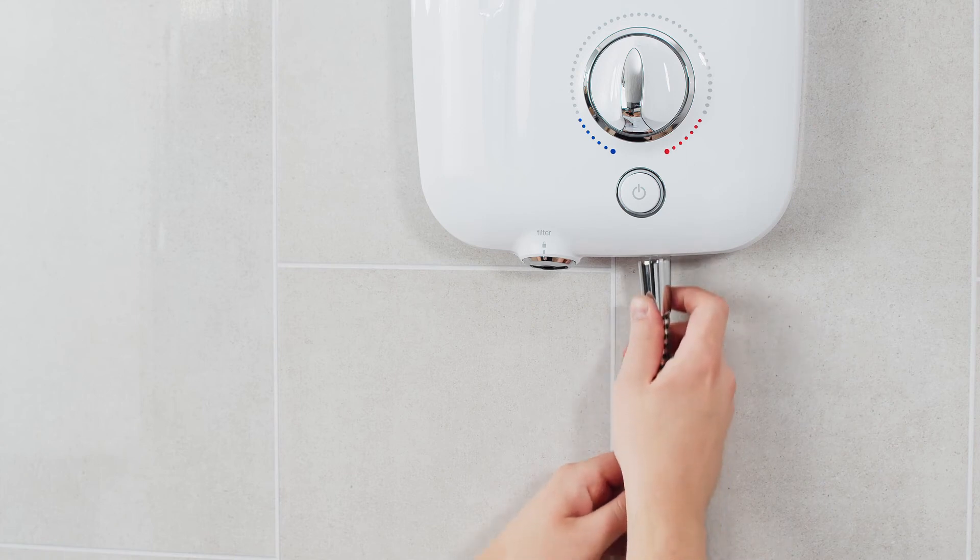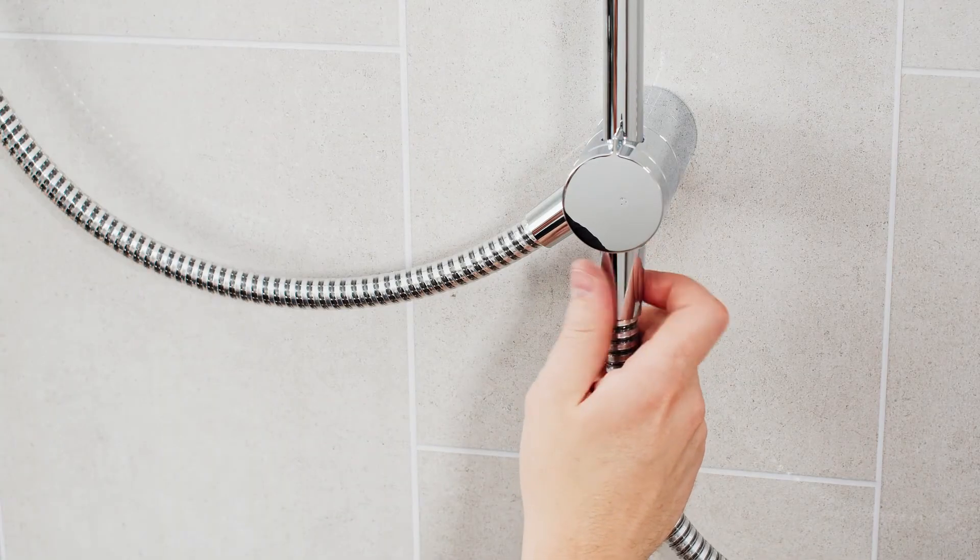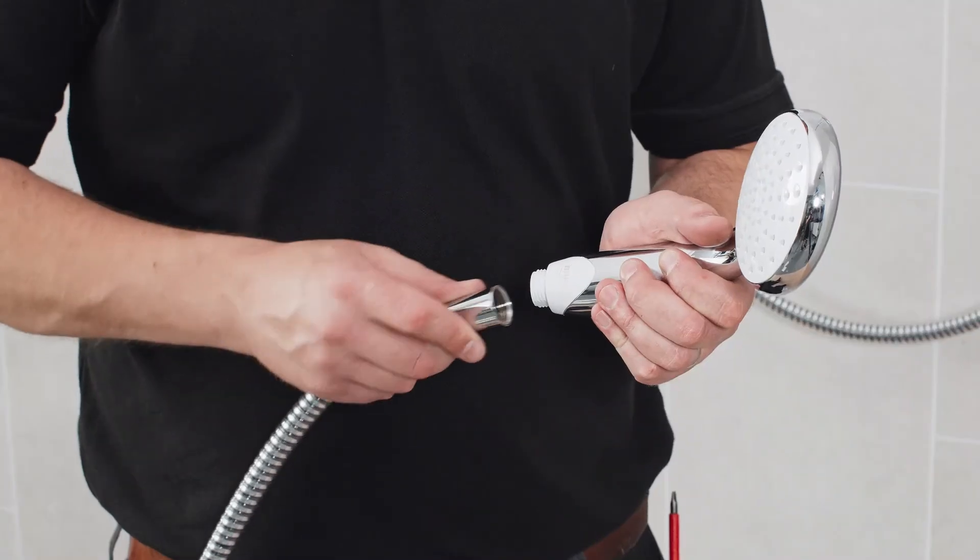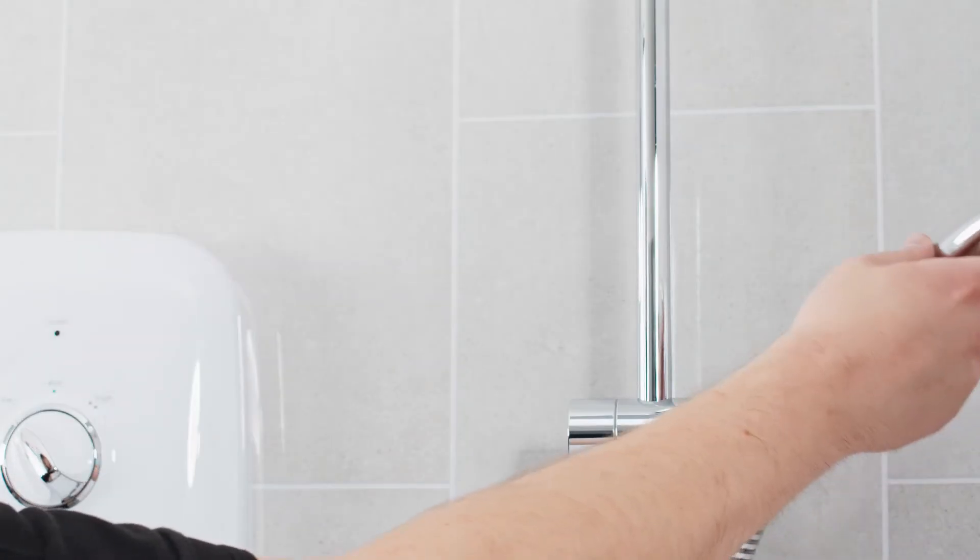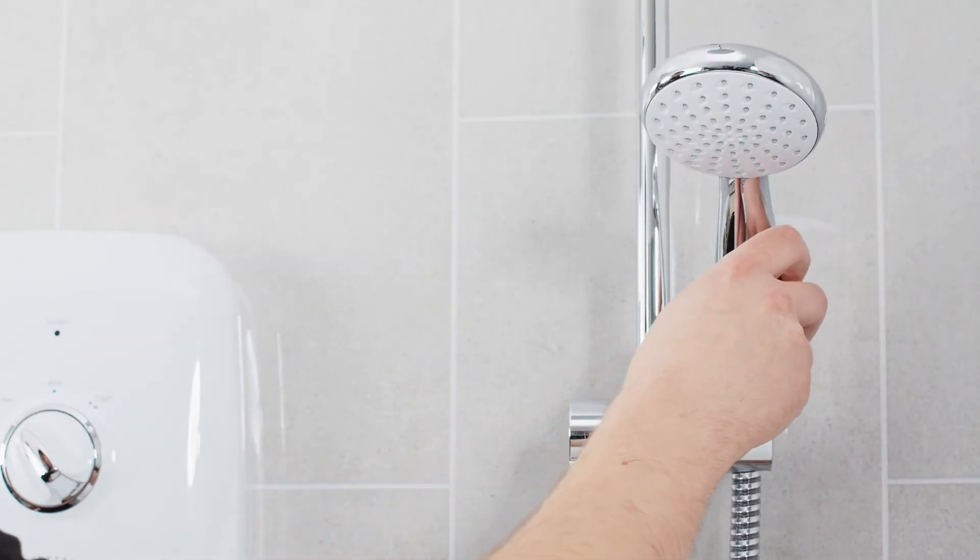The diverter assembly can then be connected to the shower unit using the shorter diverter hose. The longer hand shower hose can also be connected and the handset secured into the clamp bracket, taking care to thread the holes through the hose retainer ring to comply with water regulations.